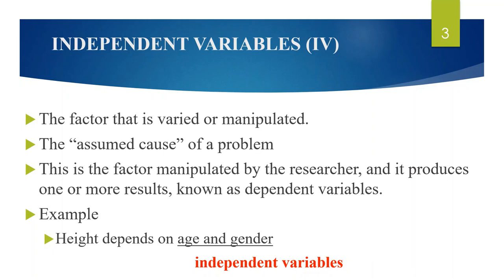First, let's see what are independent variables. An independent variable is a variable that affects the dependent variable. It is a factor that is varied or manipulated in a research study. It is the assumed cause of a problem. For example, let us say height depends upon age and gender — here, age and gender are the independent variables.